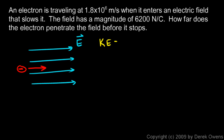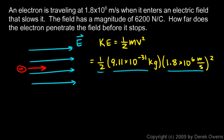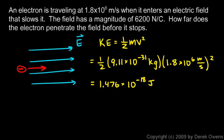I'm going to do this using energy. First, I find the kinetic energy of the electron: one half mv squared. The mass of an electron is 9.11 times 10 to the negative 31st kilograms — very, very small. I multiply by the velocity squared: 1.8 times 10 to the 6 meters per second, squared. That gives 1.476 times 10 to the negative 18th joules. That's not a lot of energy, even though it's moving so fast, simply because the electron is so small.